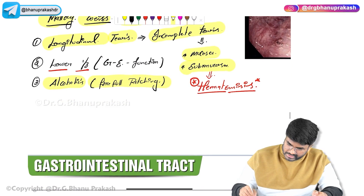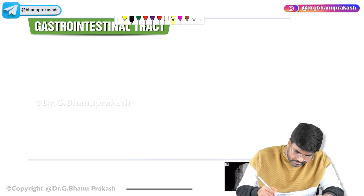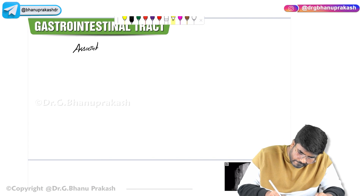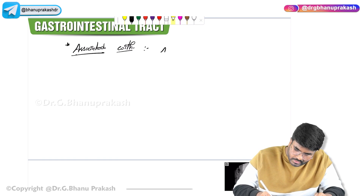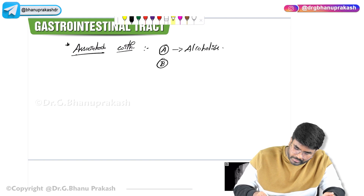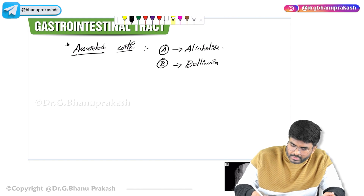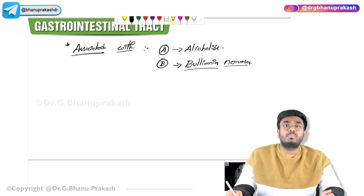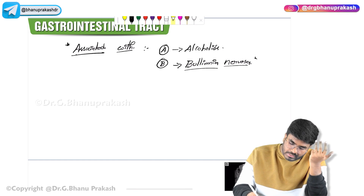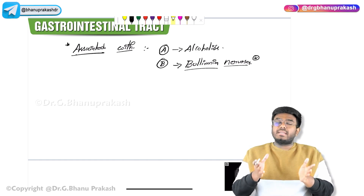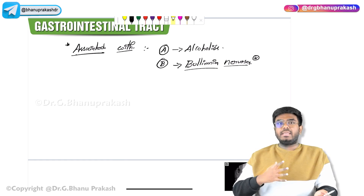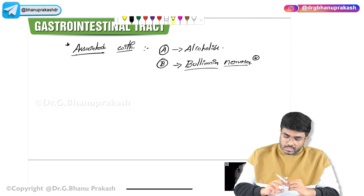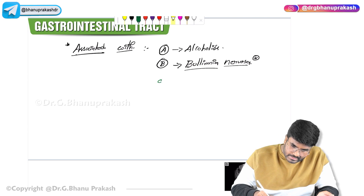Associations of Mallory-Weiss tears can be remembered with the mnemonic A, B, C. A stands for alcoholics. B stands for bulimia nervosa — a psychiatric disorder where the individual does forceful vomiting after binge eating in order to control their weight. Bulimia nervosa can lead to Mallory-Weiss tears. C stands for coughing — forceful coughing.